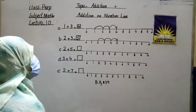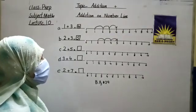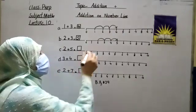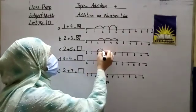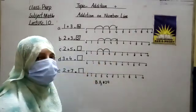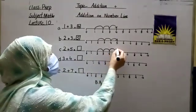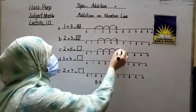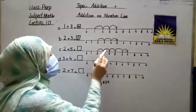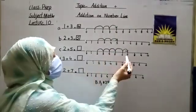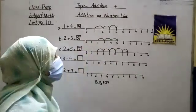Next question is 2 plus 5. Using the number line, we move left to right. Start with 2 and make 5 jumps — all students make jumps with me: 1, 2, 3, 4, and 5. Look at the number below — the number is 7. Very good, the answer is 7.